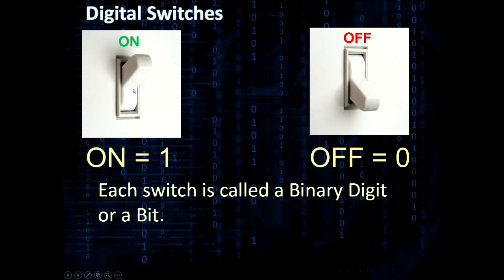Each of these switches is called a binary digit or a bit. B-I-T, you take it from that, the b-it, a bit. A bit is the binary equivalent of a digit. So usually you'd have a five-digit number, in binary it would be a five-bit number.